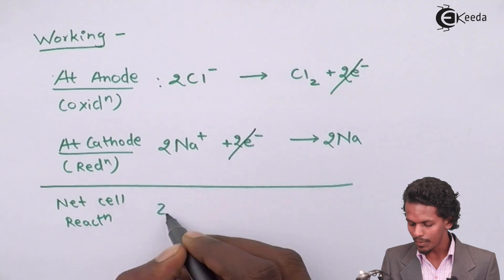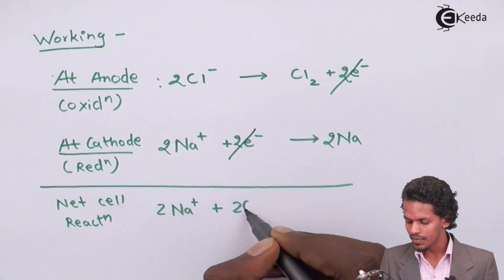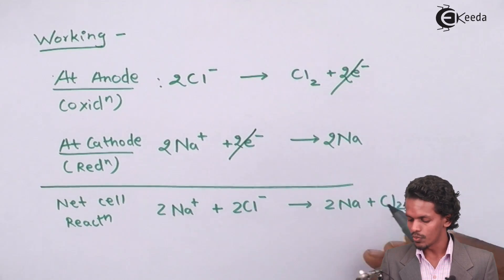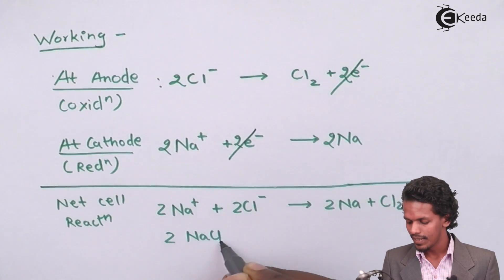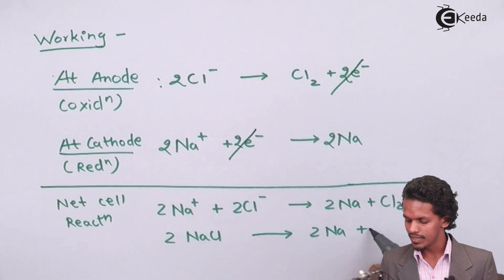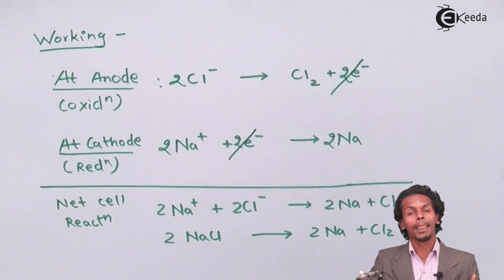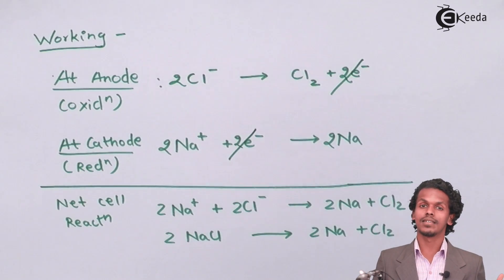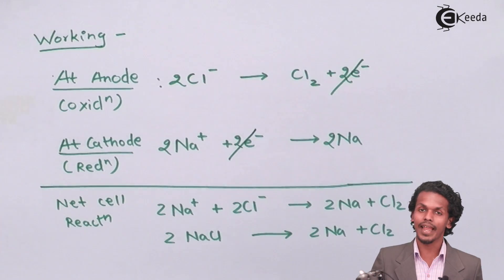And the thing that will be left with us is - this will be the net cell reaction. In this case, two times Na+ plus two times Cl- will give us two times Na plus Cl2. I could write this equation as two times NaCl giving us two times Na, that is sodium, plus Cl2. So this is how we have applied electricity so as to separate these two atoms or elements - sodium and chlorine.